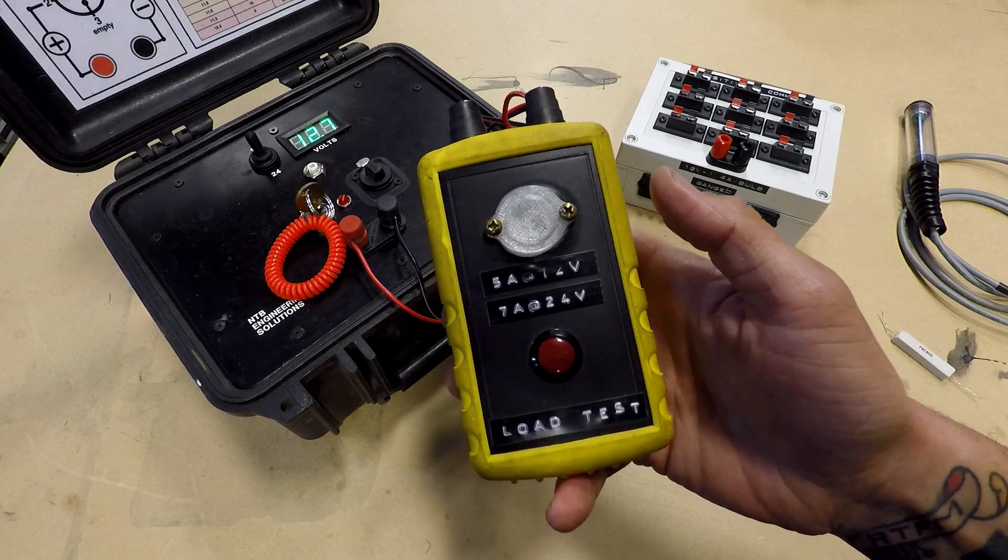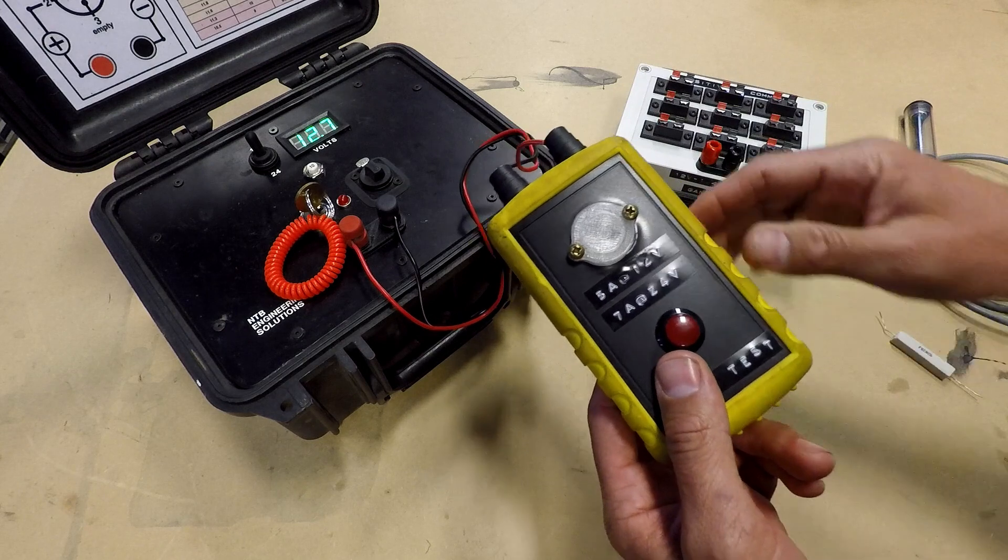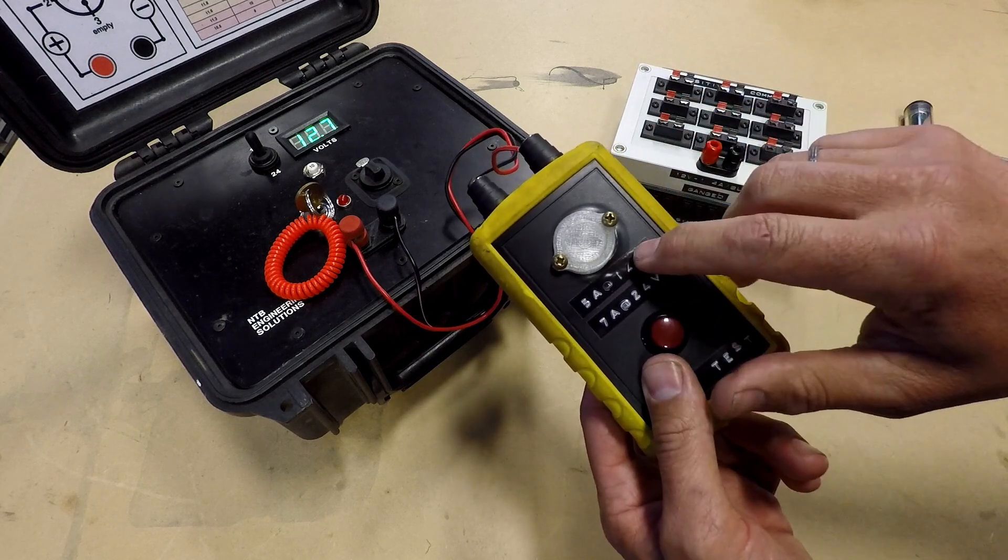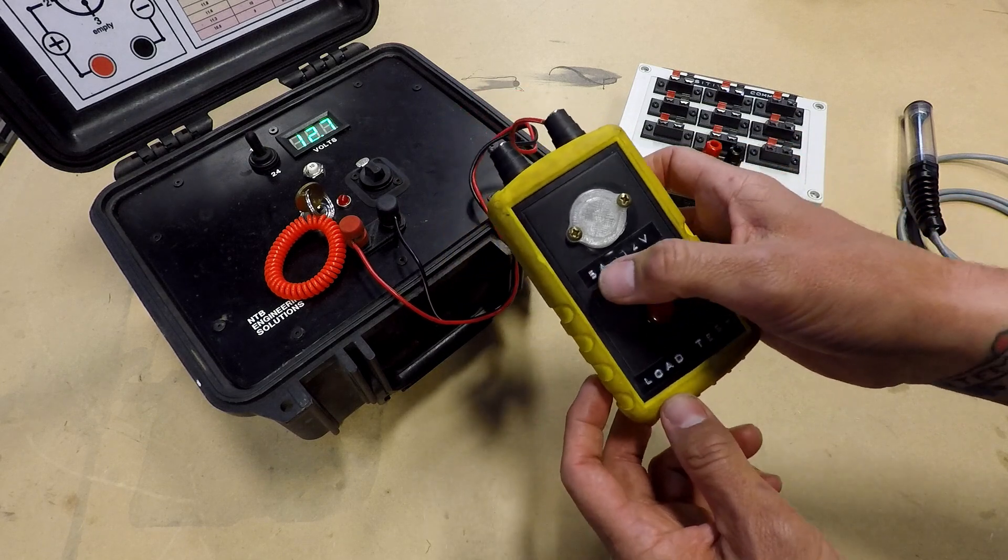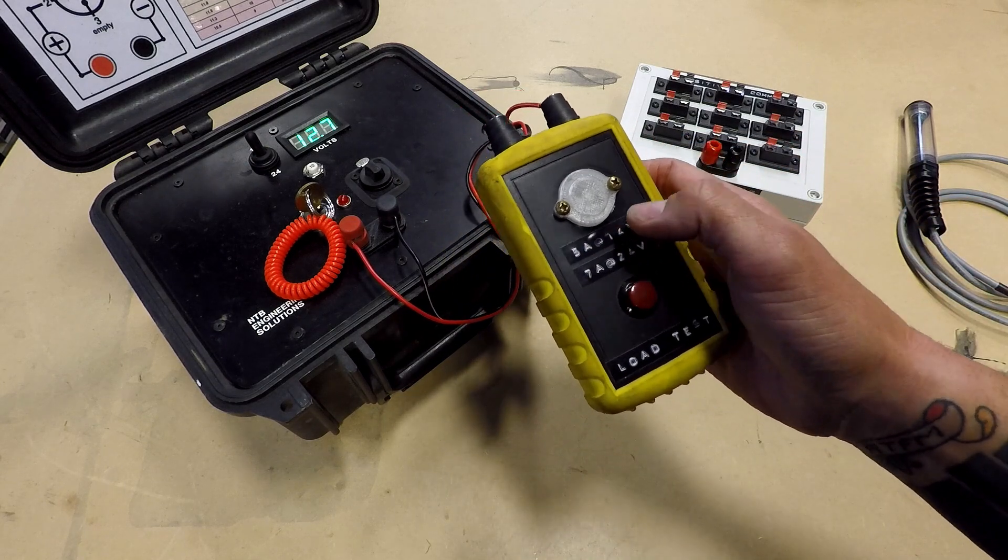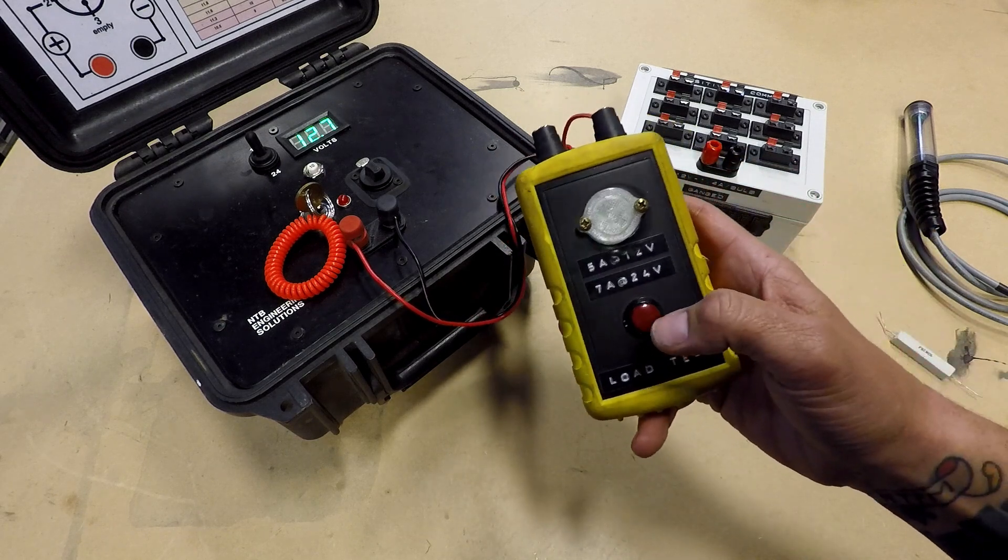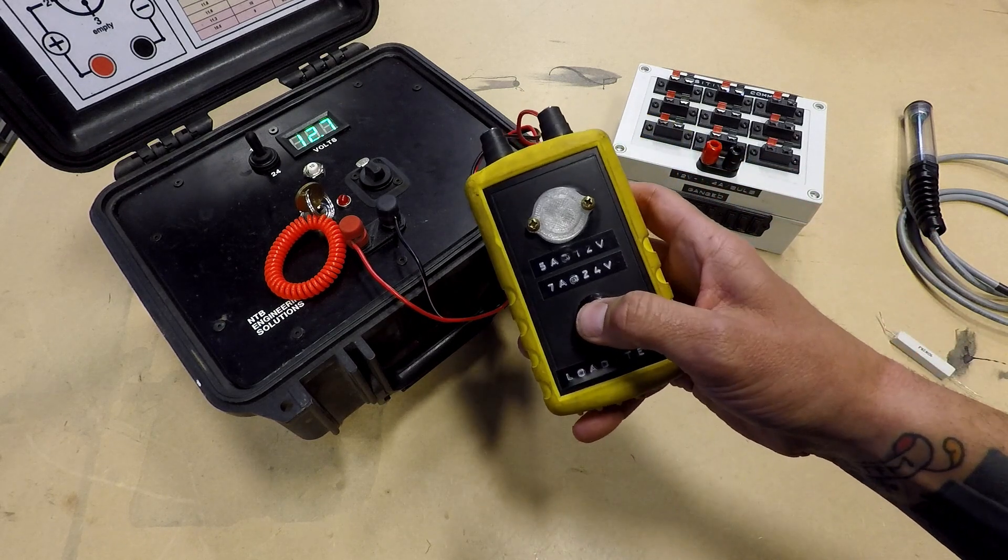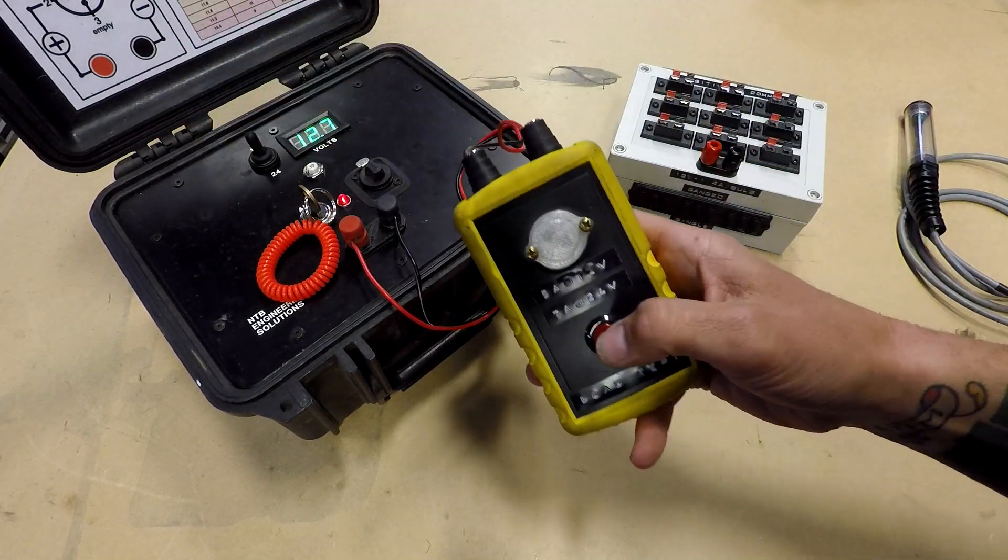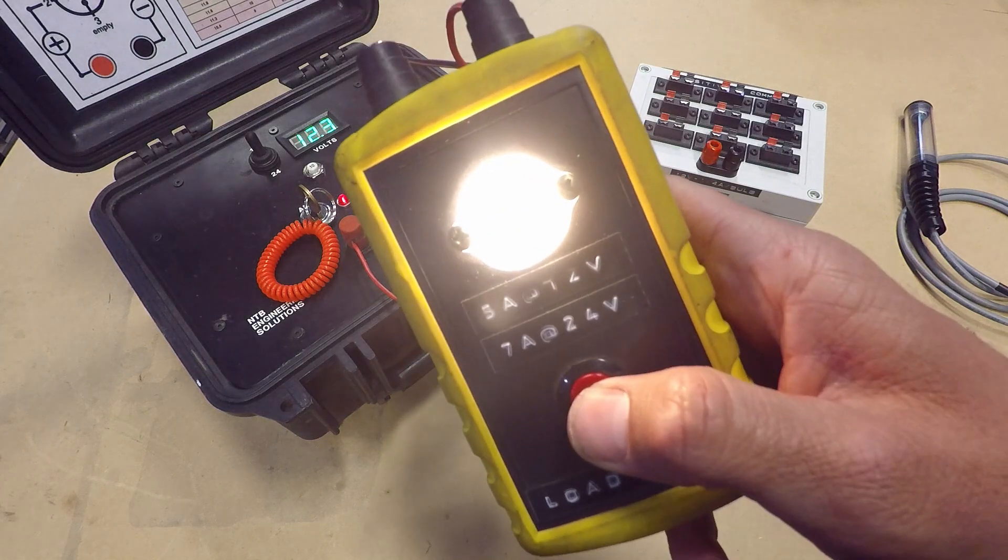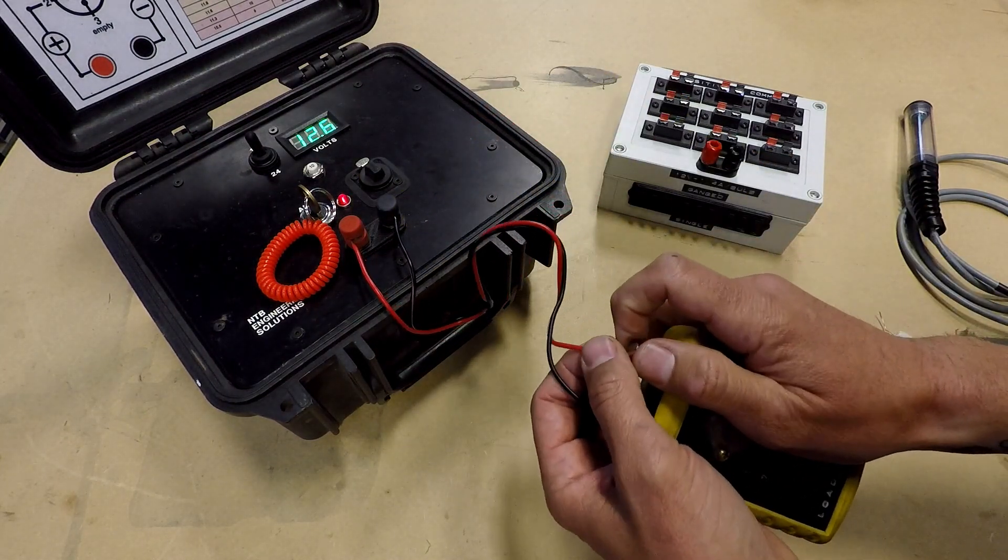The other device I want to show you is this little handheld tester, which is similar in concept to this larger box but instead of having nine separate circuits, it's only a single circuit. It's one bulb inside of there that pulls a tremendous amount of power for such a tiny little bulb, pulls about five amps when you're running at 12 volts, about seven amps at 24 volts. Does the same thing, allows you to load test with just a press of a button. So if this is wired directly to our battery at 12 volts, turn the key switch on, that light turns on and turns on bright.